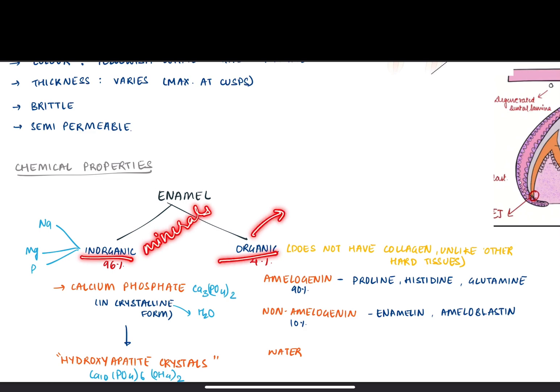The inorganic content is 96%, which is the reason why enamel is so hard in its nature. The organic component is 4%. The inorganic part mainly consists of calcium phosphate in crystalline form.